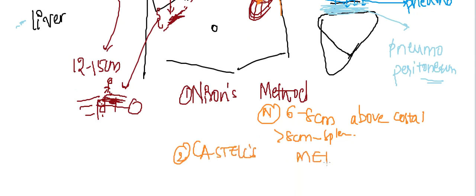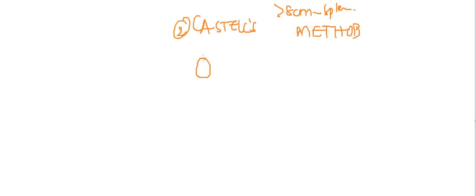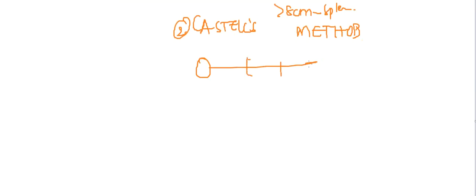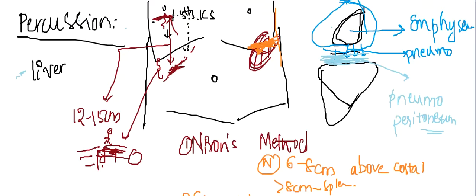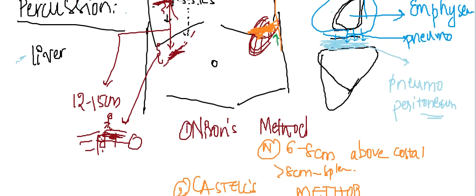The second method is Castle's method, where the patient is in the supine position. Percussion is done from the lowest intercostal space in the anterior axillary line — not in the mid-clavicular line. This normally produces a resonant note. If there is splenomegaly, it produces a dull note instead.